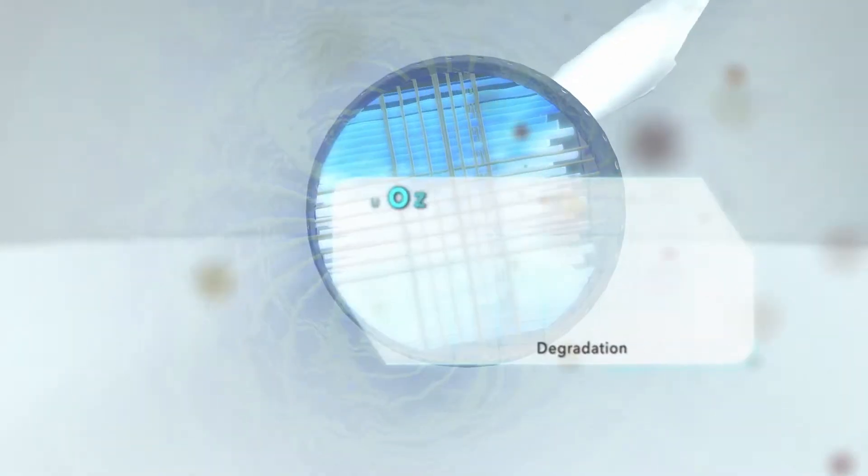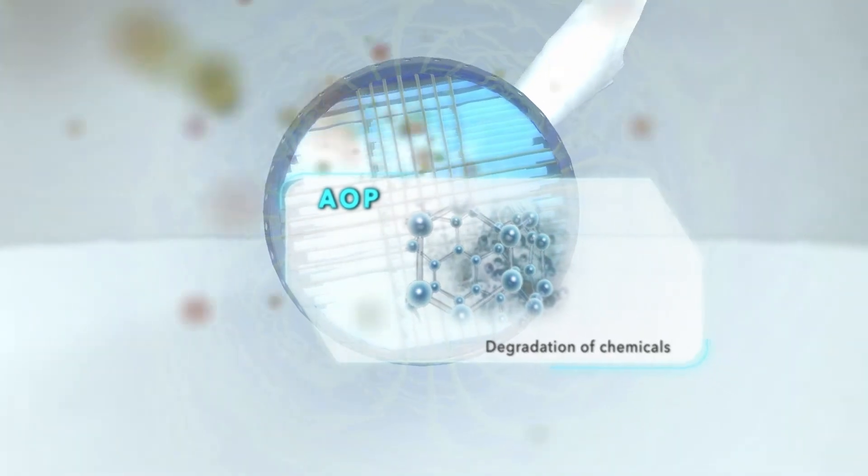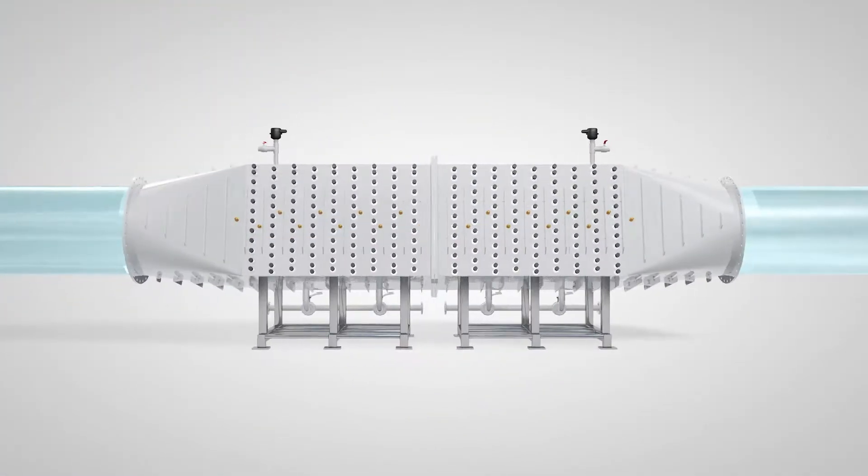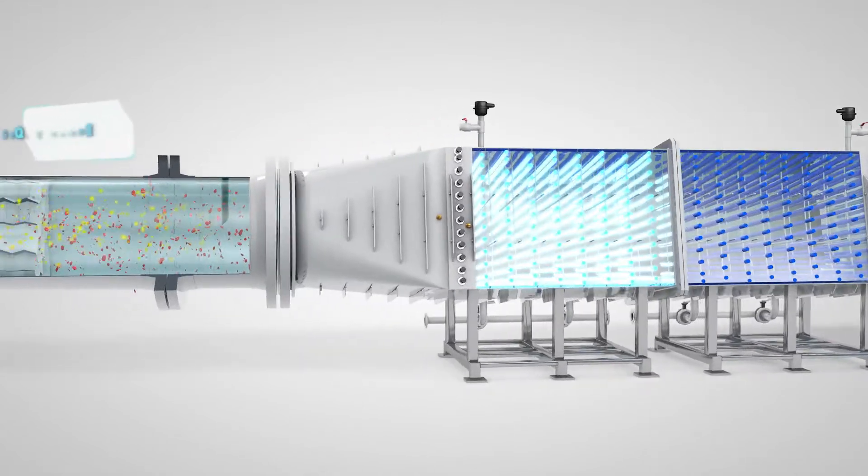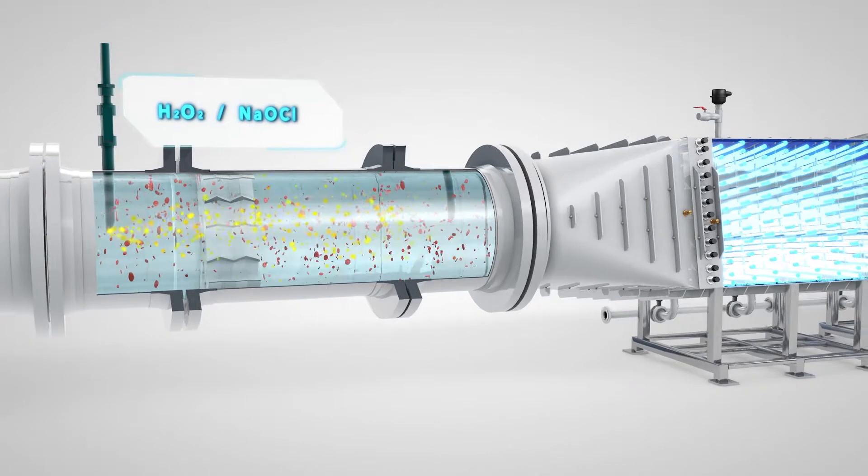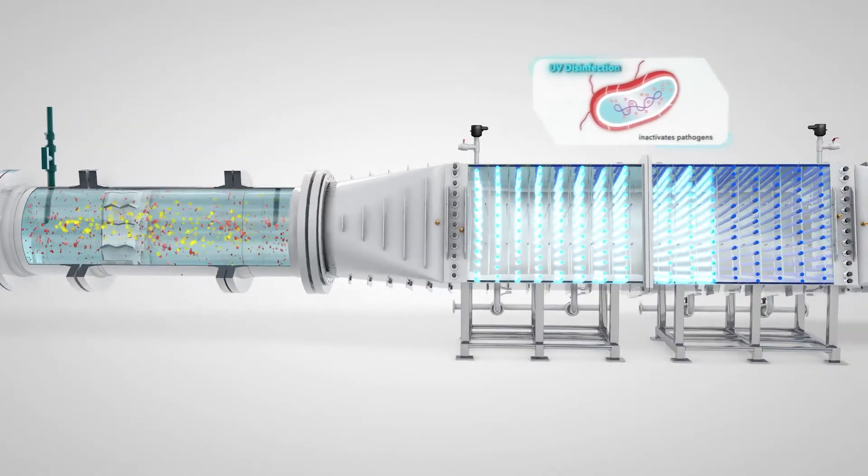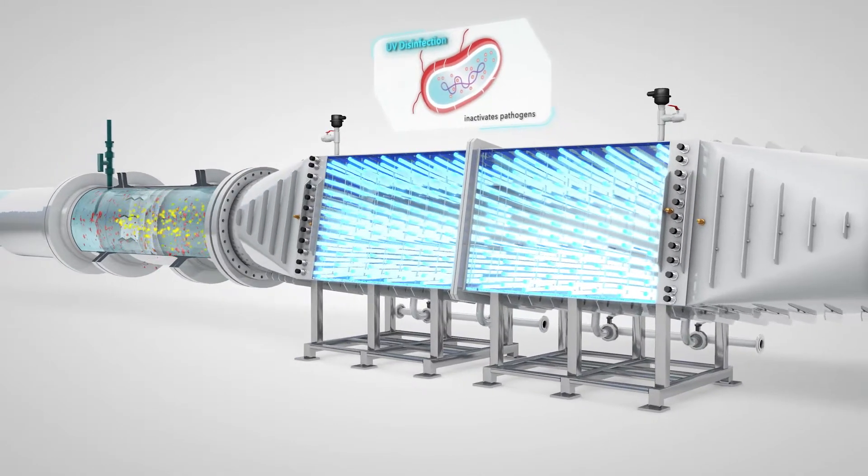Advanced Oxidation Processes provide a robust barrier against pollutants. Hydrogen peroxide or sodium hypochlorite are added to water and irradiated with UV light. This creates a powerful hydroxyl radical that can destroy almost every contaminant and effectively inactivate pathogens.